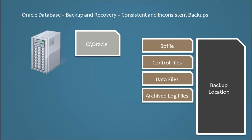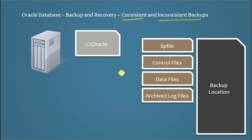There are two types of backups: consistent backup and inconsistent backup. Let me first explain consistent backup. Consistent backup is backing up the database when there is no transaction happening or when there is nothing pending.